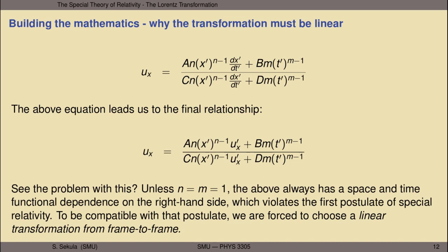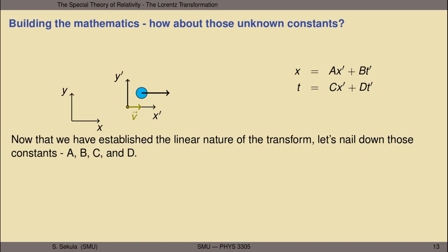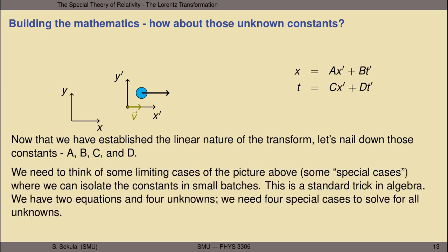Now that we've accepted that we need a linear transformation from frame S prime to frame S, we get a simplified pair of equations: x equals a·x prime plus b·t prime, and t equals c·x prime plus d·t prime. But we don't know what these coefficients are. This is a standard trick in algebra: we have four unknowns and two equations, so we're going to need four special cases to solve for all the unknowns, and the postulates give us the framework to define those special cases.